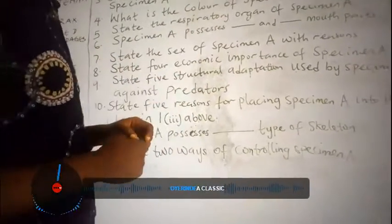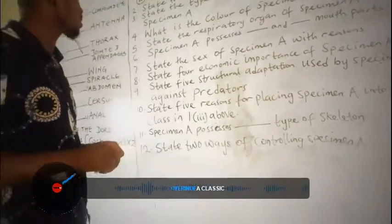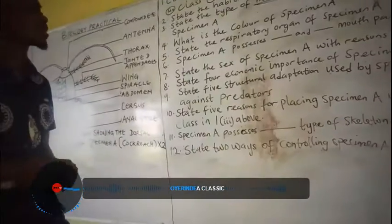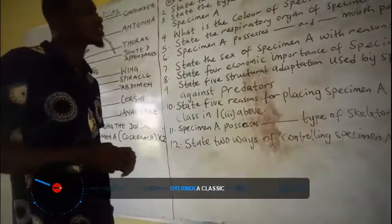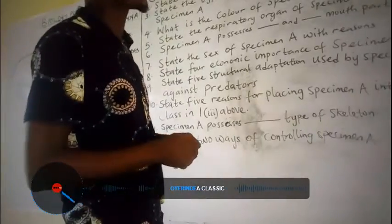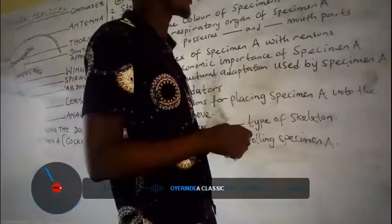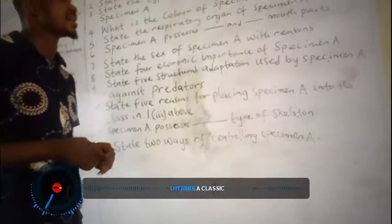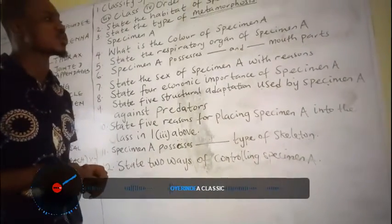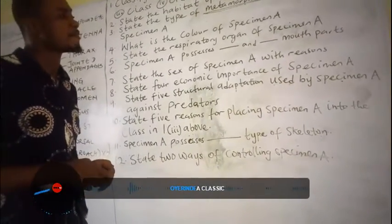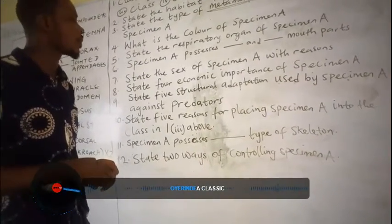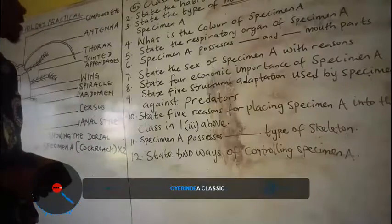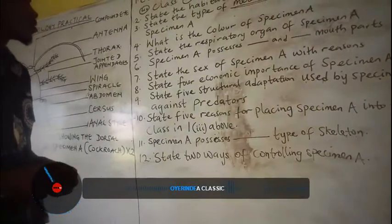The next question asks what mouth parts specimen A possesses. It possesses biting and chewing mouth parts.